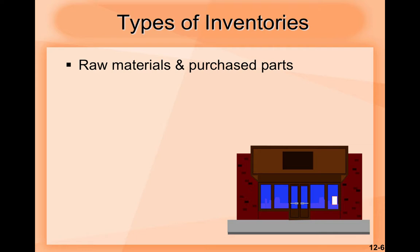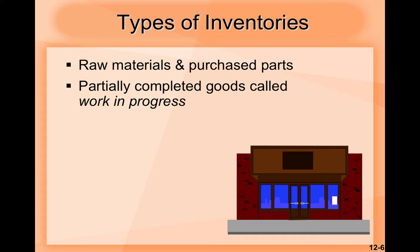Now let's look at types of inventories. The first type stores raw materials and processed parts — the elements you will use in order to process them and make them into something else. The second type is partially completed goods, called work in progress. This is like the second stage of the process in which the inputs are the raw materials and processed parts, going through all the changes these elements face in order to become something else.